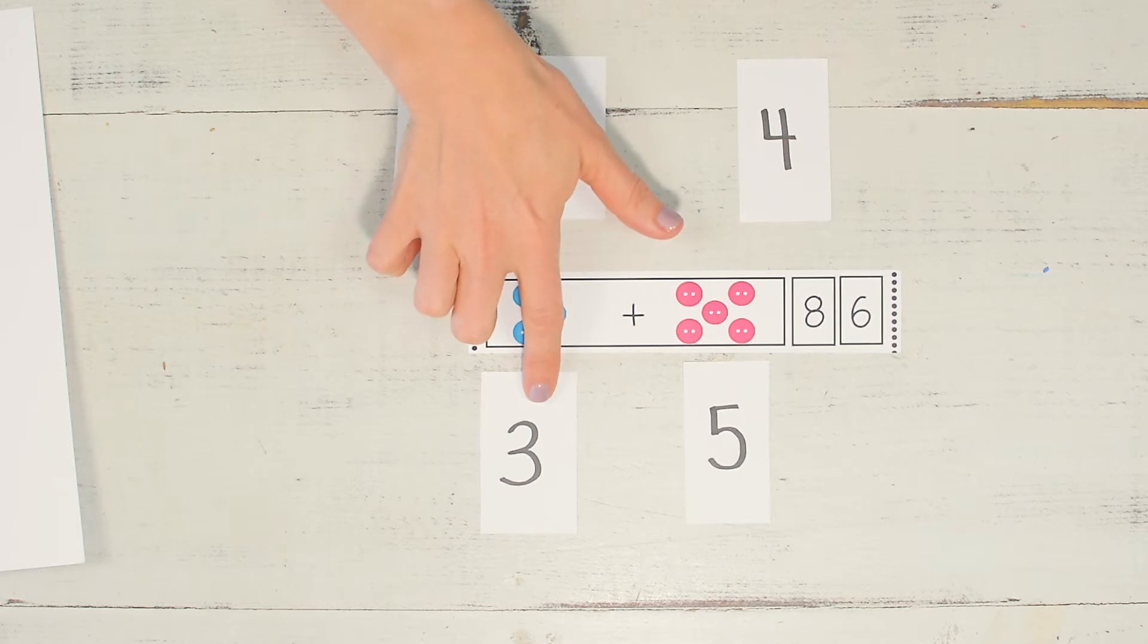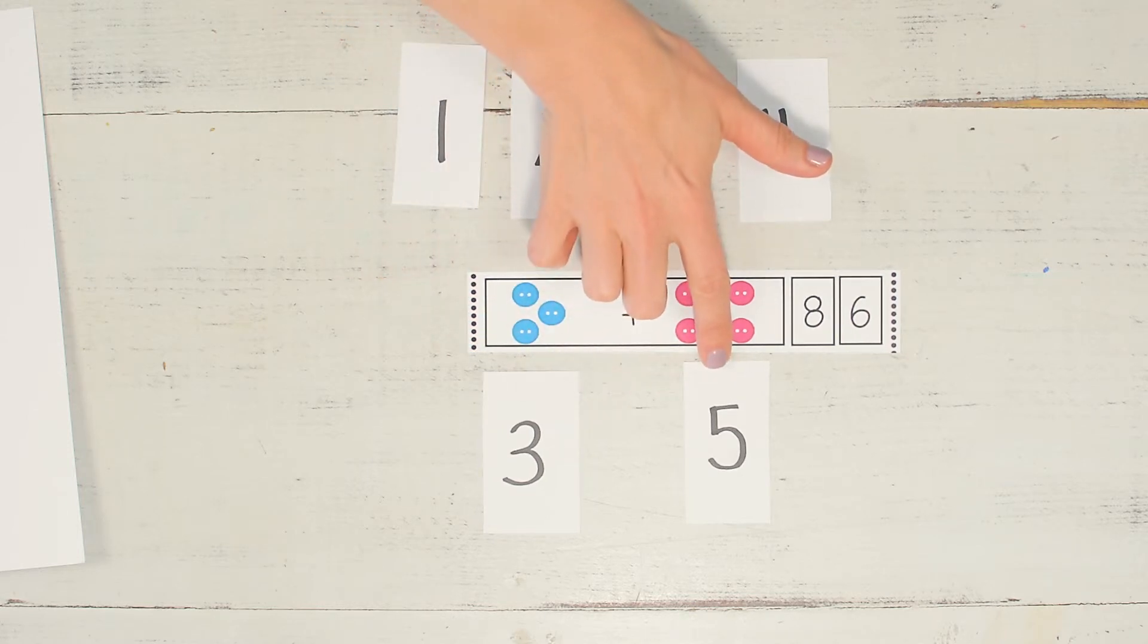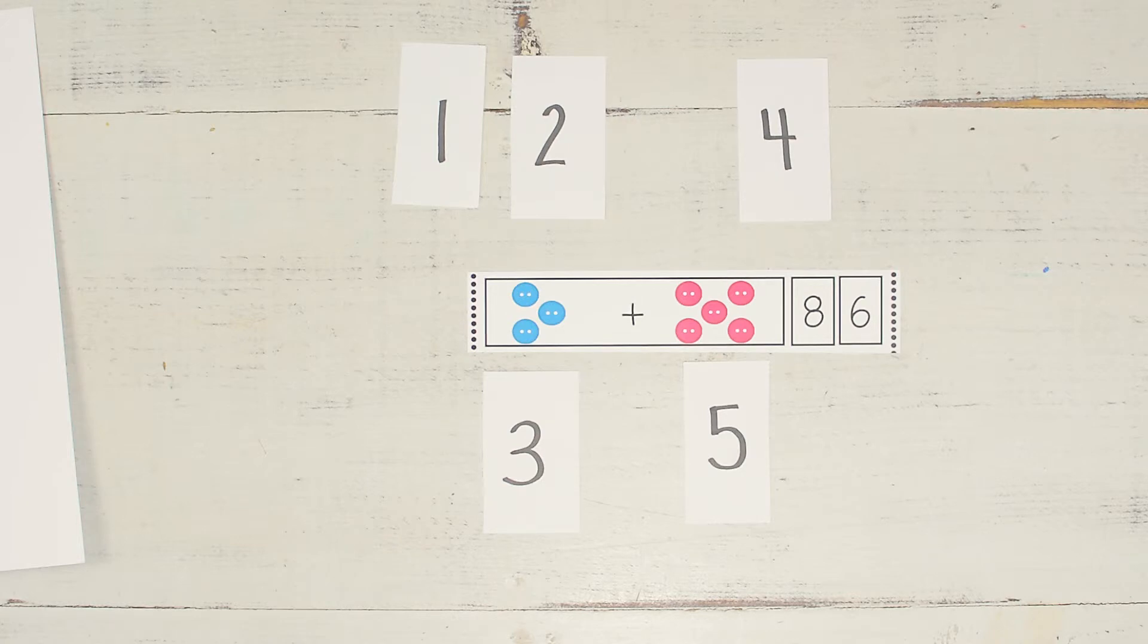Now we have three plus five. If you know what three plus five is, point to it. If it's still a little challenging, we are going to add all the buttons up together.